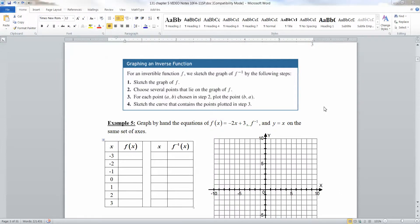So now let's talk about how to graph an inverse function. For an invertible function f, we sketch the graph of f inverse by taking the following steps. One, you sketch the graph of f. Two, you choose several points that lie on the graph of f. And then for each point AB chosen in step 2, you plot BA and then sketch that curve.